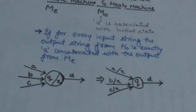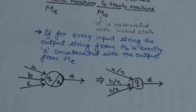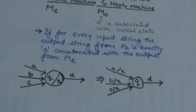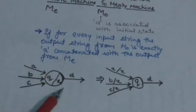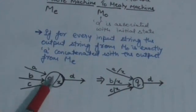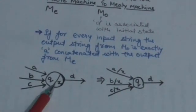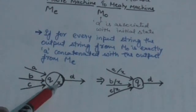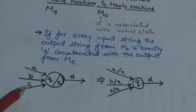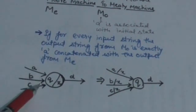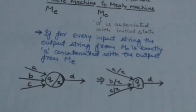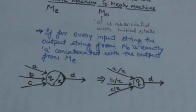Now let's see how we can convert a Moore Machine into a Mealy Machine. In Moore Machine, outputs are associated with states. This is the state of a Moore Machine where output is labeled with the state. Now look at these incoming edges — these incoming edges represent transitions to this state from some different states.